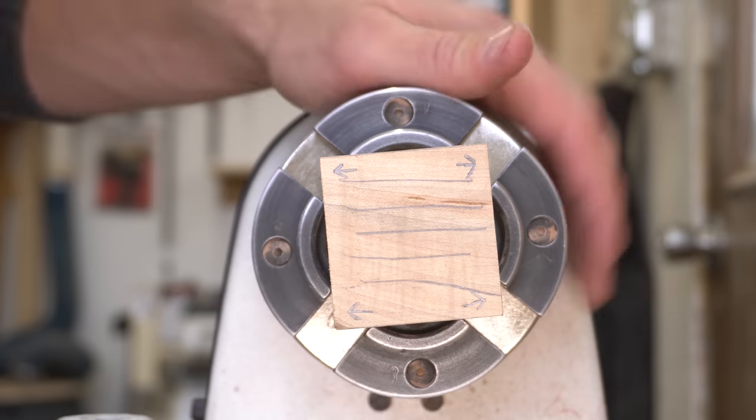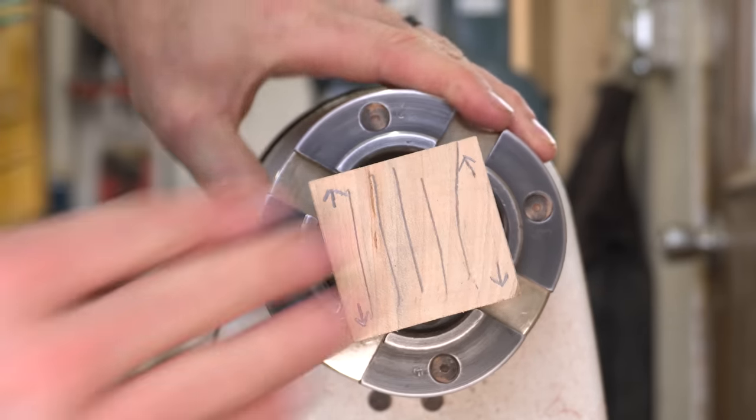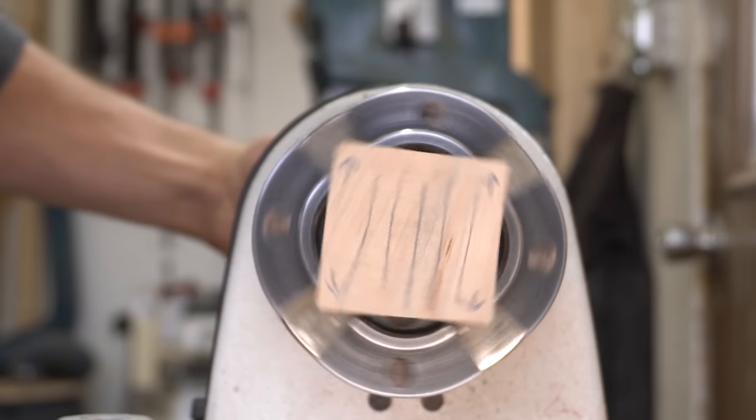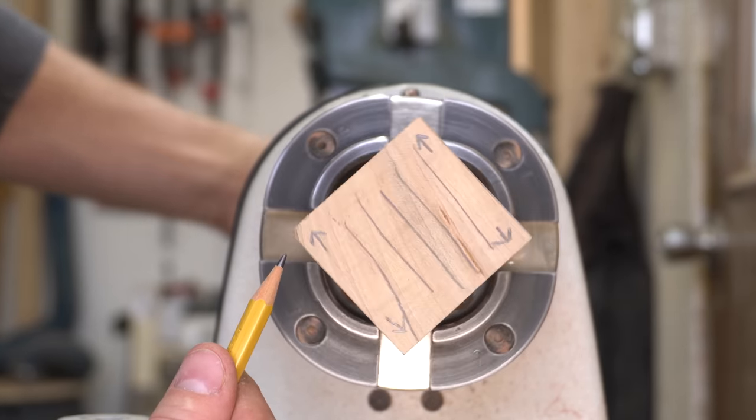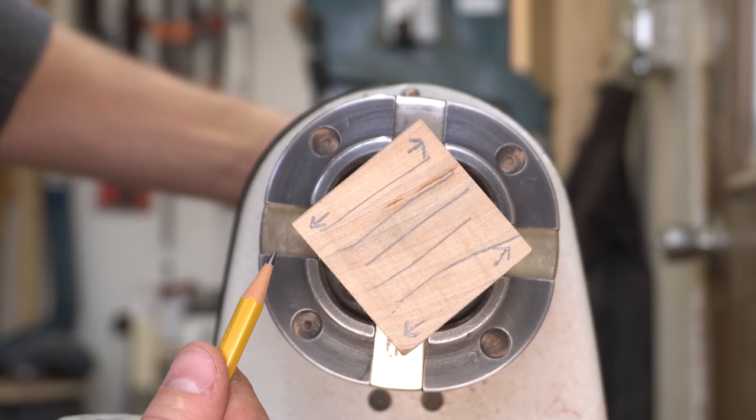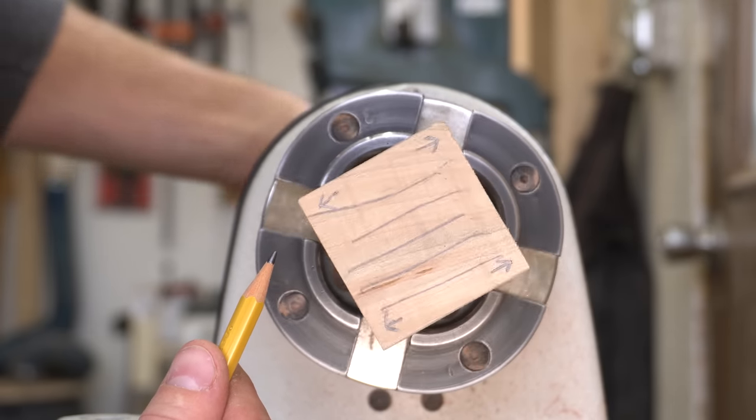I drew some arrows on each corner to represent the direction the end grain is traveling in relation to a cutting tool. From this view, you can see that per revolution there are two instances of the grain coming down towards the cutting tool, and two where the grain is actually going away.